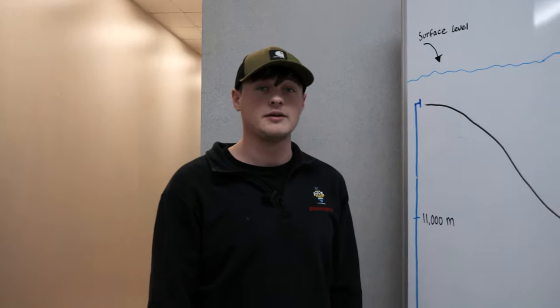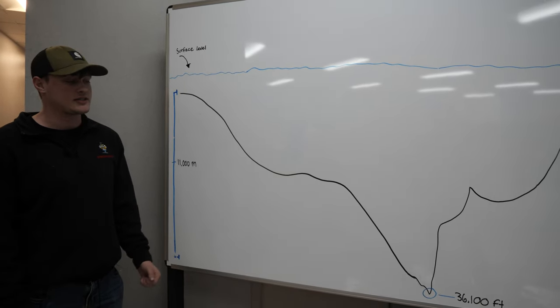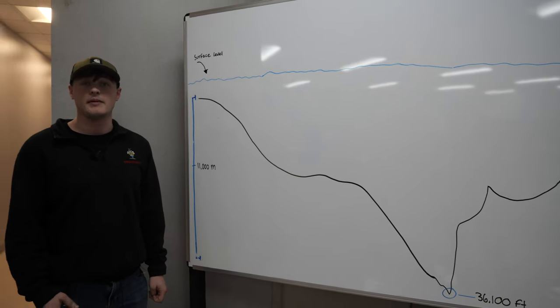Did you know the deepest part of the ocean is the Challenger Deep in the Mariana Trench? It measures in at about 36,000 feet, which is about 11,000 meters deep. That's deeper than Mount Everest is tall.